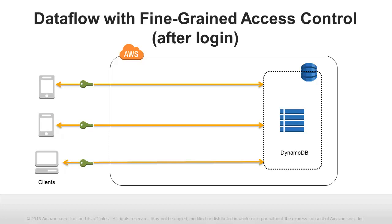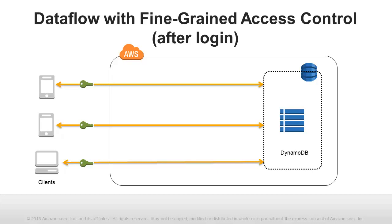Fine-grained access control is ideal for use in mobile applications that use social identity providers. Web Identity Federation allows users to authenticate with public identity providers, such as Login with Amazon, Facebook, or Google. The combination of Web Identity Federation and fine-grained access control can mean there is no longer a need for proxy servers. Use of Web Identity Federation is not required to benefit from fine-grained access control. Application authors may also implement fine-grained access control policies using IAM users and groups.